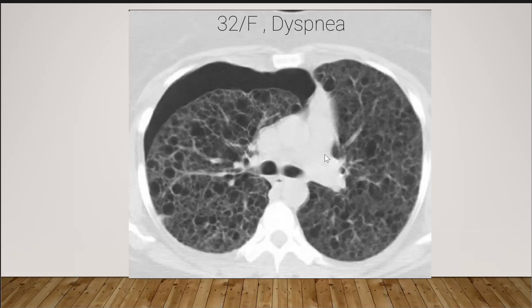To recap: this is LAM — lymphangioleiomyomatosis. There is uniform distribution of multiple lung cysts, and it can be associated with pneumothorax or chylothorax. The cysts are uniformly distributed and involve the costophrenic angle. In histiocytosis, the costophrenic angle is not involved, cysts are upper lobe predominant, and irregular in size. In LAM, cysts are uniform in size. Histiocytosis is associated with smoking, and LAM occurs in females.